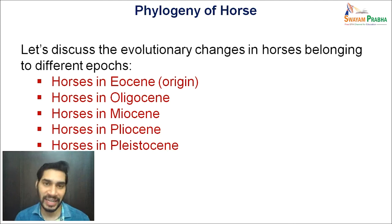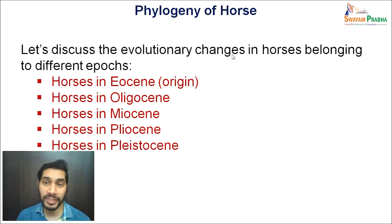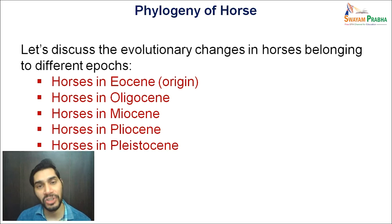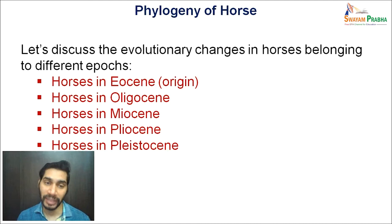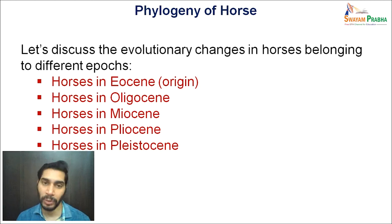After having a brief understanding of what has been the evolutionary trends in the phylogeny of horse, now let us discuss the evolutionary changes in horses belonging to different epochs — that is, the modern horse which has acquired all these evolutionary trends, how they travelled across their journey of time. We will take representative examples of each of these epochs and focus on understanding their structural changes throughout their journey.